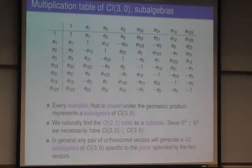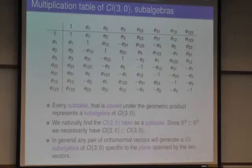And in general, any pair of orthonormal vectors generate, like this, a four-dimensional subalgebra specific to the plane which is spanned by the two vectors.